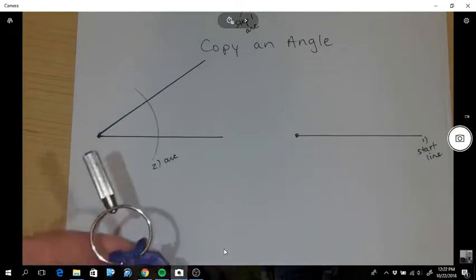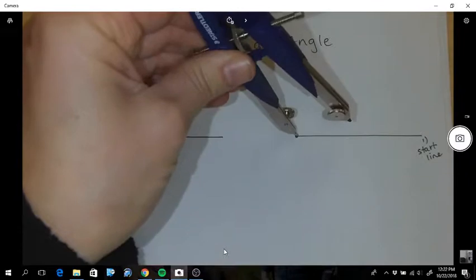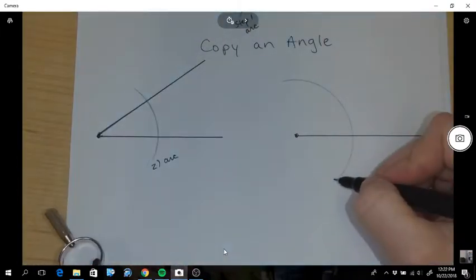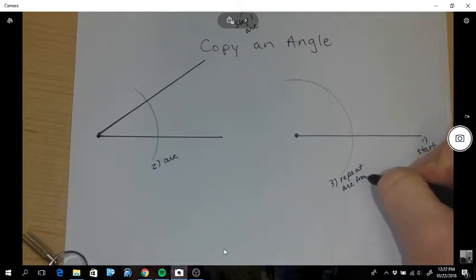Step three is you're going to take the same compass measurement and you're going to go over here, go to the vertex and draw the same arc. Step three, repeat arc from step two.